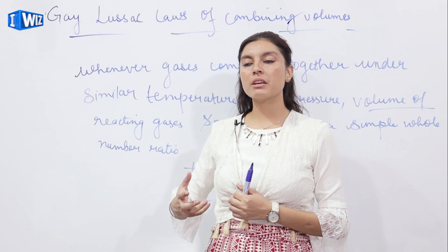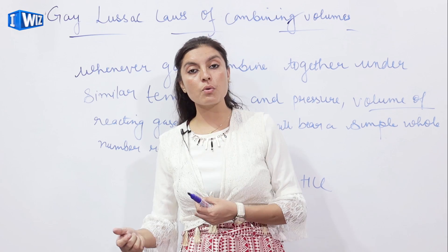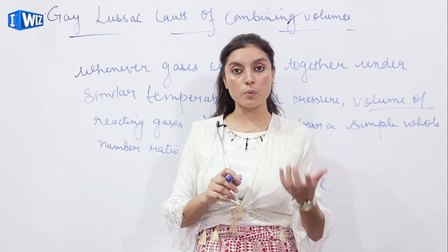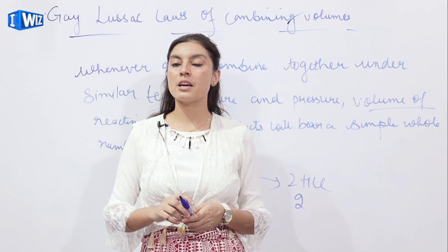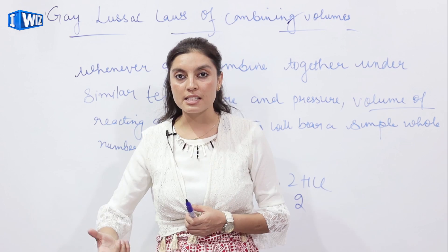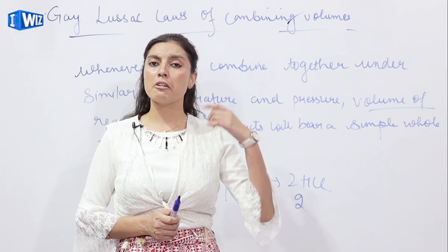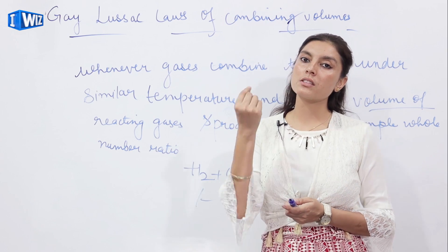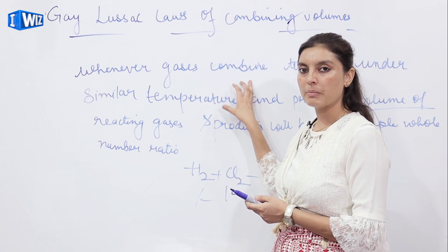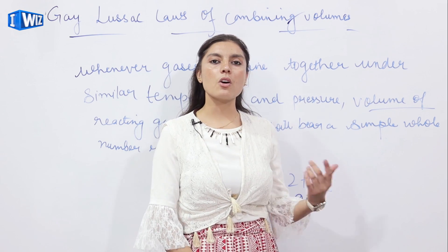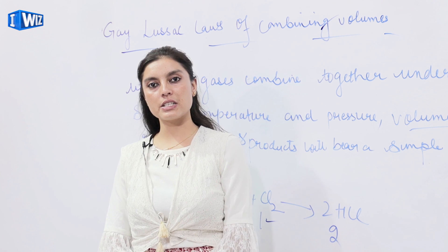In these laws we have studied the way in which chemicals or elements react together, the ratios they bear, whether they remain the same throughout, or vary when a third element is involved. For exam questions, these laws may be asked individually with examples, or as a five-mark question asking you to explain all five laws of chemical combination. Always mention the statement of the law along with a simple example to fetch full marks.